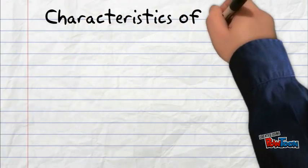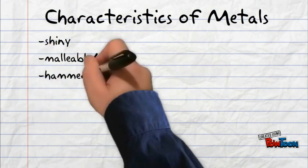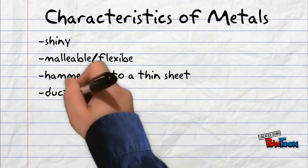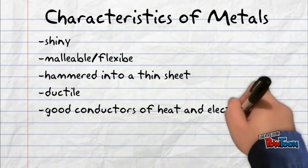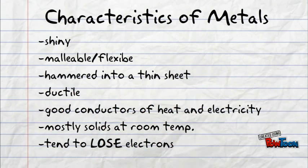Let's start off with some characteristics of metals. They are shiny, malleable, they can be hammered into a thin sheet, they are ductile, good conductors of heat and electricity, mostly solids at room temperature, and they tend to lose electrons.